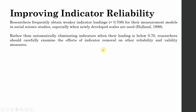You do not simply remove your indicators because their loading was less than 0.708. You assess whether this removal will significantly improve the reliability and validity. If your reliability and validity is already above the required limit, you do not need to delete an indicator just because its loading was less than 0.708.